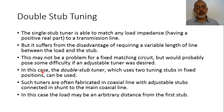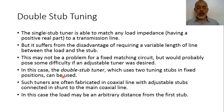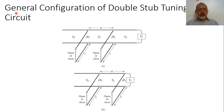In this case, a double stub tuner uses two tuning stubs at fixed positions — meaning the transmission line section between the two stubs is fixed, not variable. Such tuners are often fabricated in coaxial transmission line with adjustable stubs connected to the main coaxial line. The load may be at an arbitrary distance from the first stub.